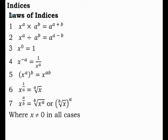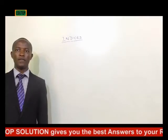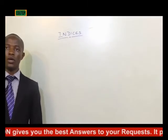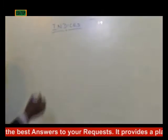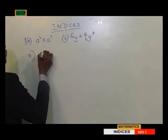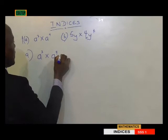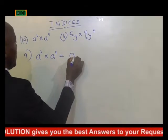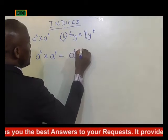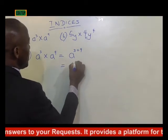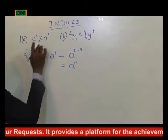We'll work some examples to explain all this further. The first example is based on the first law of indices. Example 1a is a raised to power 3 times a raised to power 9. For part a, a raised to power 3 times a raised to power 9 is the same as a raised to power 3 plus 9, which equals a raised to power 12.